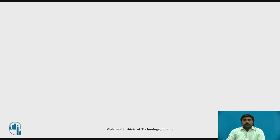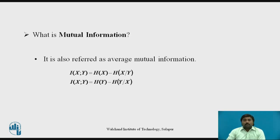Before starting with the actual session, let's pause and think about what is meant by mutual information. If you remember from the previous video session, we already saw what is meant by average information and mutual information. It is nothing but the difference between two entropies — average mutual information equals the difference between initial entropy and final entropy.